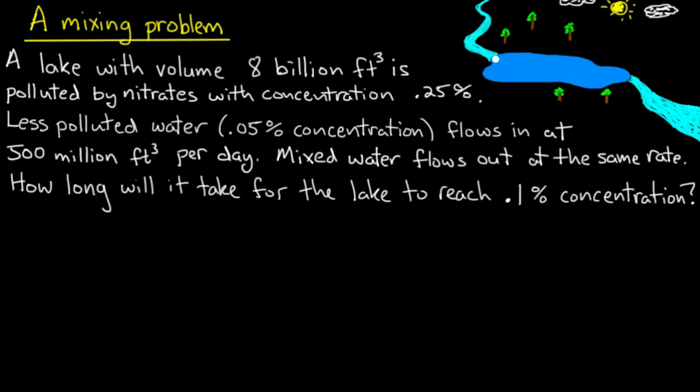And the volume of water that flows into the lake is 500 million cubic feet per day. Now imagine that there's currents in the lake that mix up the water that's in the lake and the fresher water that's flowing in perfectly. Now this mixed water will flow out in another stream, and it's flowing out at the same rate that the water flows in, 500 million cubic feet per day. Now the question is, how long will it take for the lake to reach a total pollutant concentration of 0.1%?